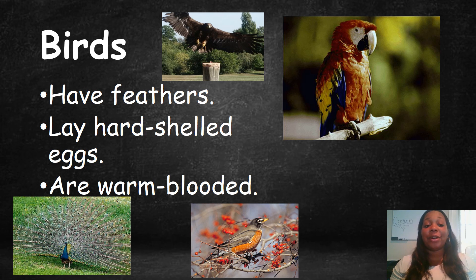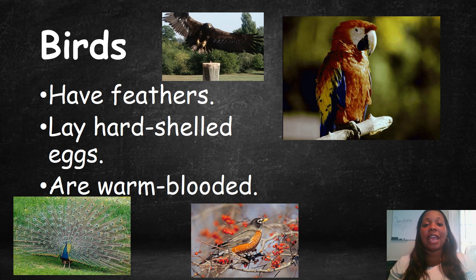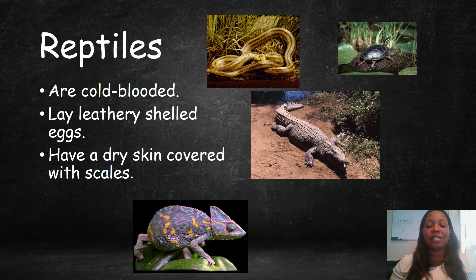Next, we have birds. Birds have feathers, they lay hard-shelled eggs, and they are warm-blooded. Some examples include hawks and eagles, parrots, sparrows, and peacocks. Let's talk about reptiles. They are cold-blooded, they lay leathery-shelled eggs, and they have dry skin covered with scales. Some examples are snakes, turtles, alligators, and chameleons.